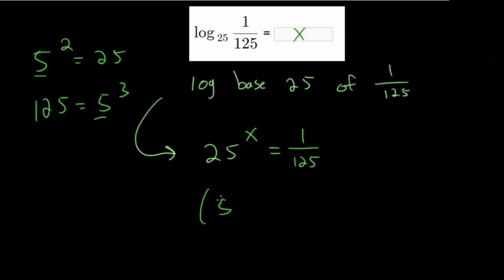So really, this is just 5 squared to the x. And we have 1 over 5 to the third. Now on the right side, we're dividing by 5 three times, which is the same thing as 5 to the minus 3 power.